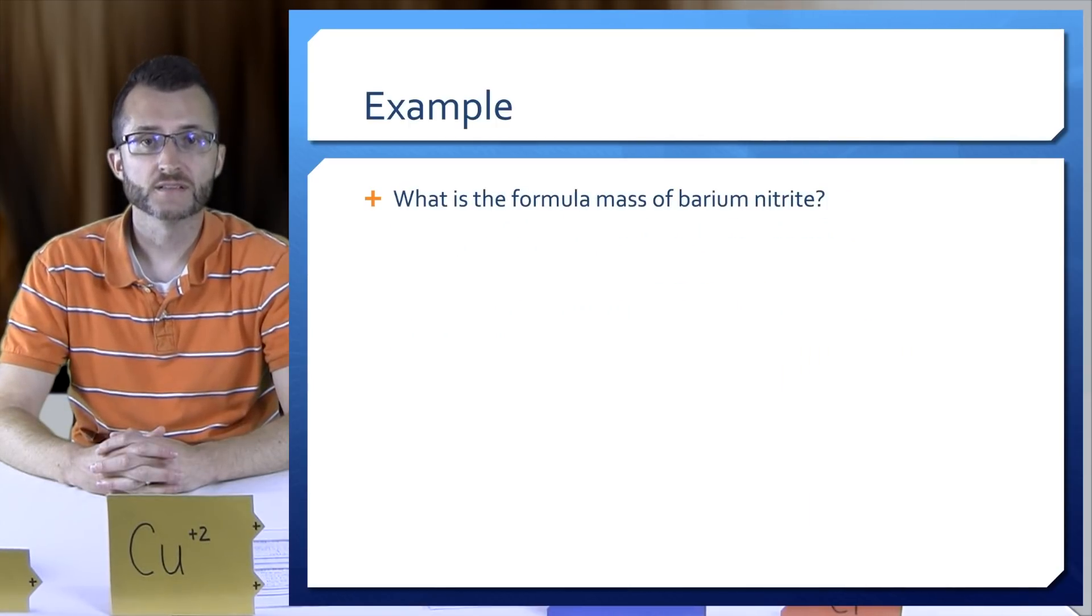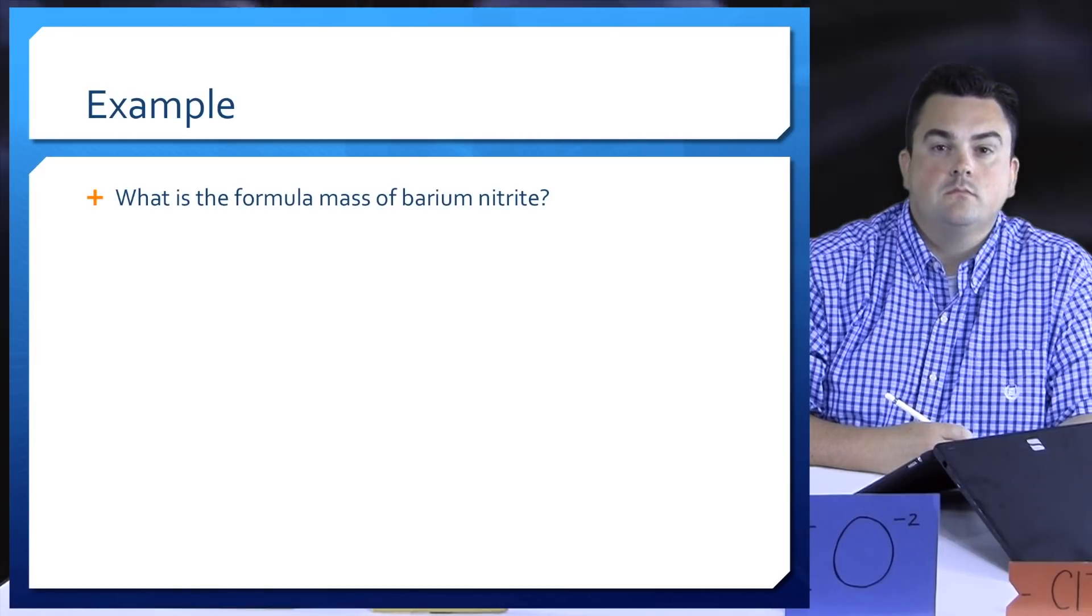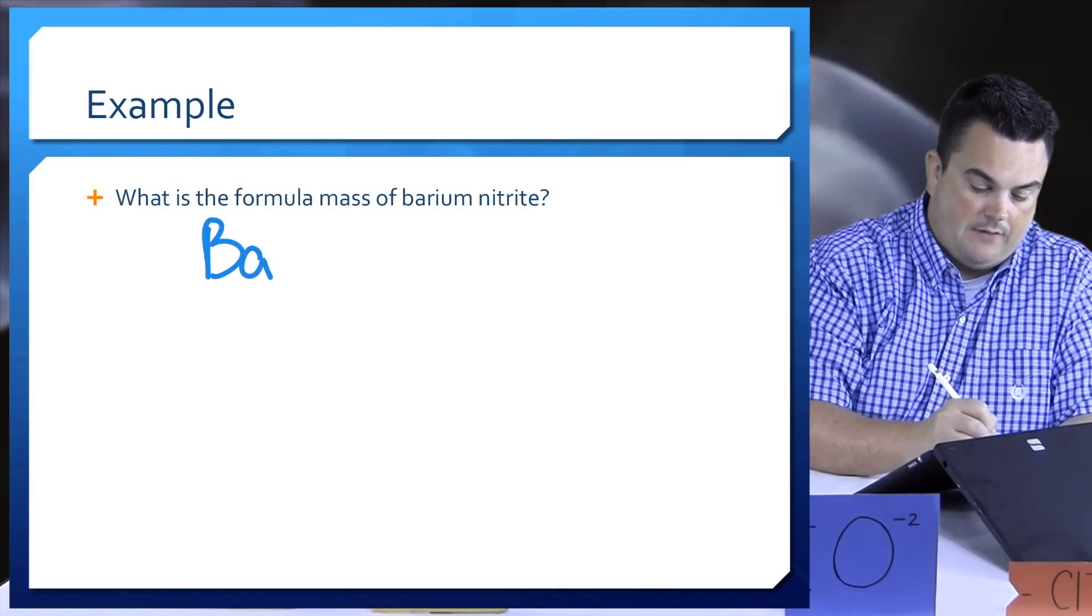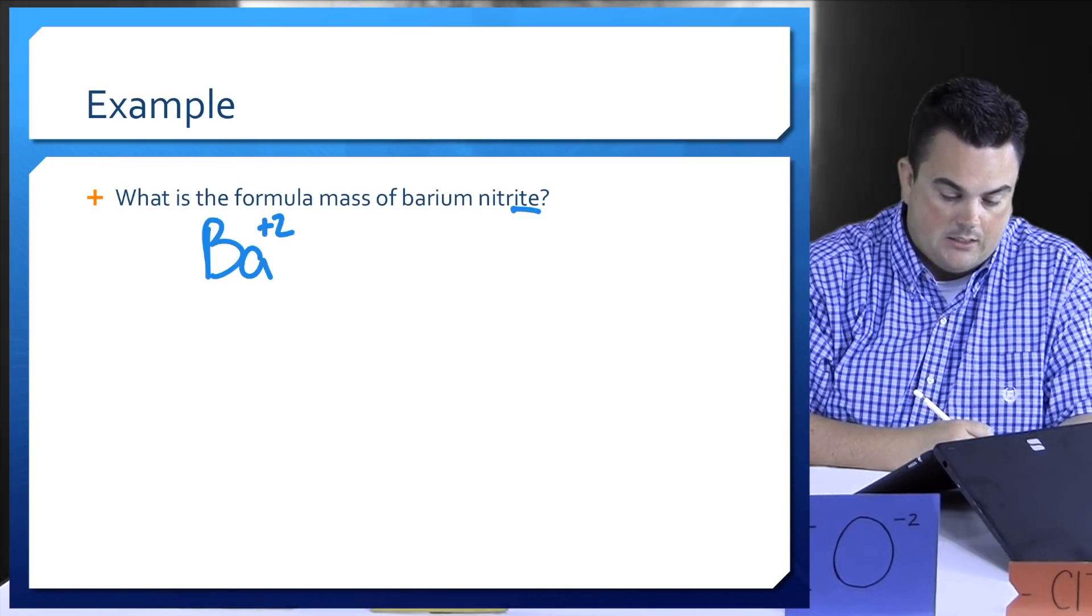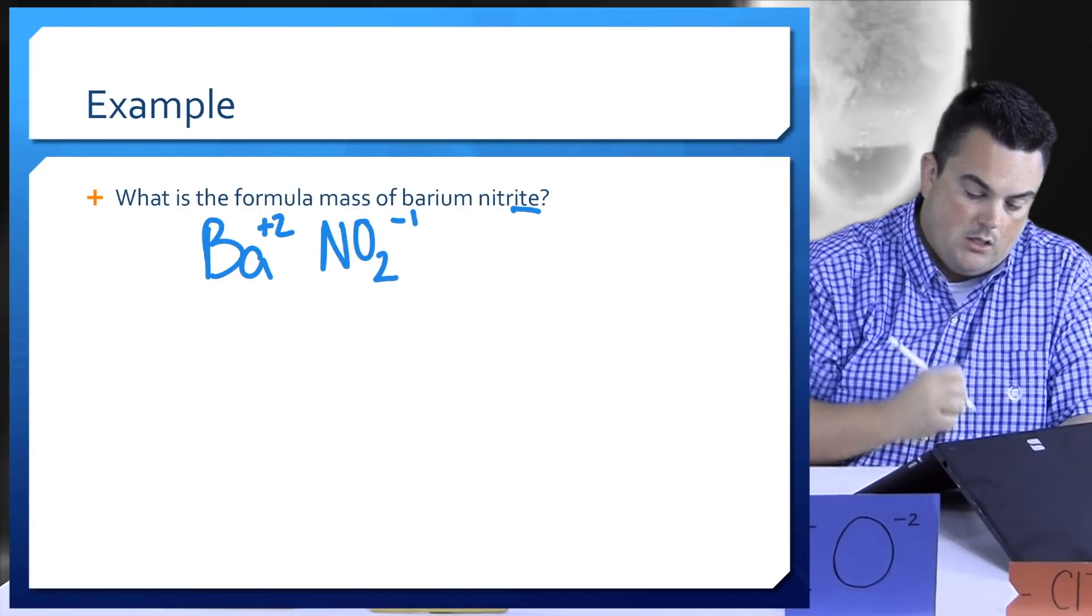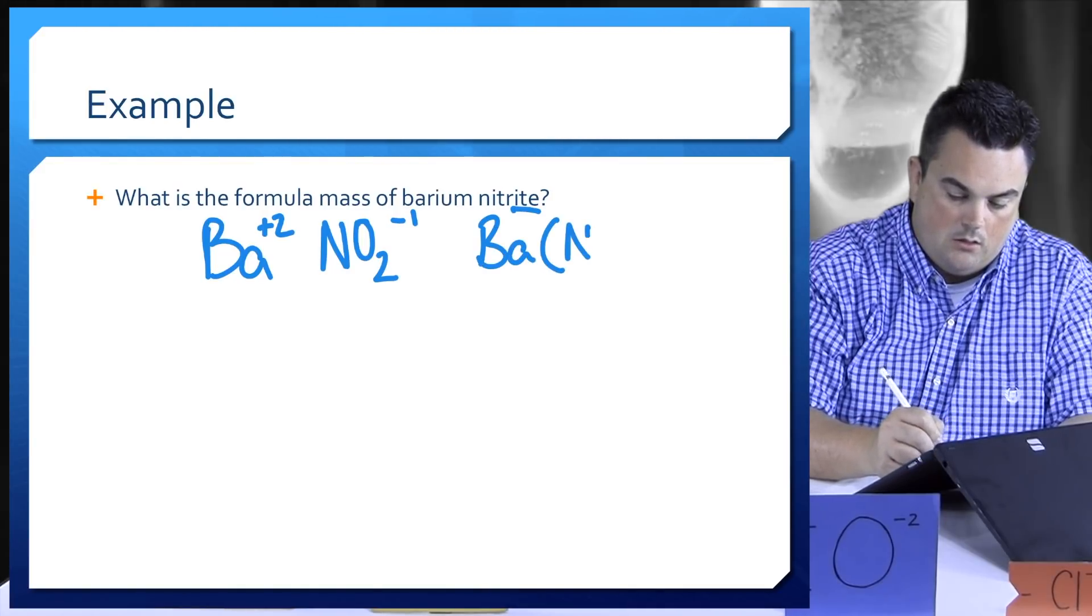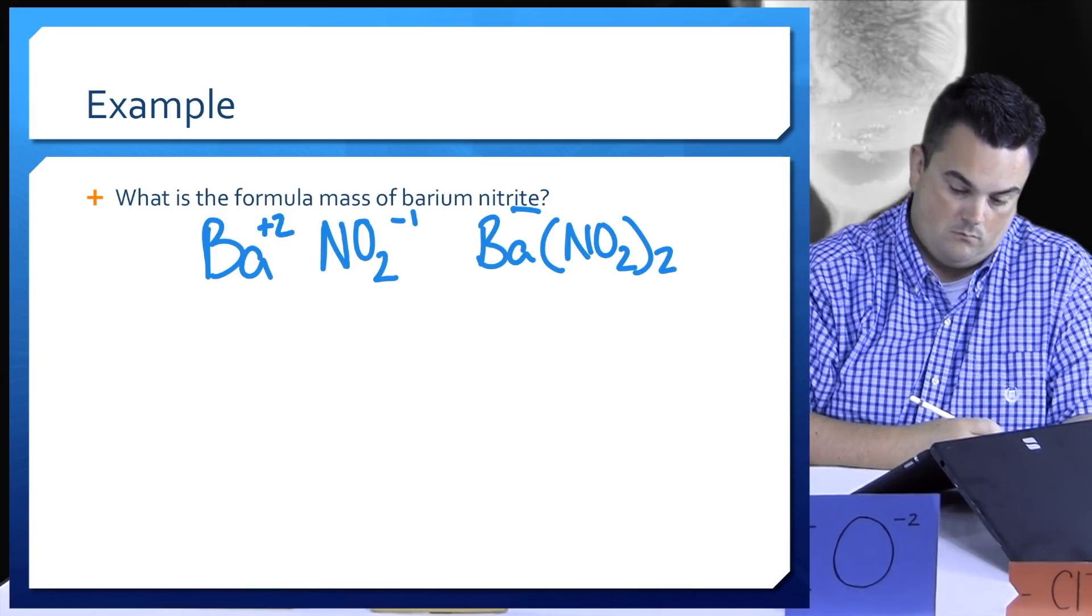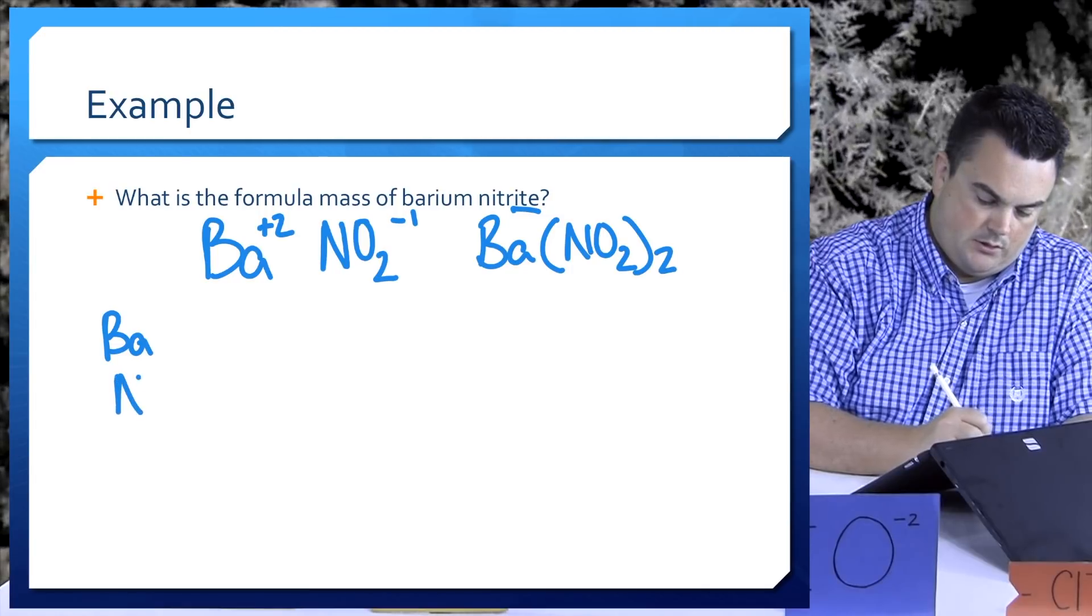Let's do an example. It says what is the formula mass of barium nitrite? As we did before we want to write the chemical formula first. Barium is Ba and that's in group two, has a plus two charge and only a plus two charge. Nitrite ends in ITE, it's a polyatomic ion on table E that is NO2 with a minus one charge. So balancing the charges out I get Ba(NO2)2. We're going to continue on by listing the elements in a column. The first one is barium and then nitrogen and then oxygen.